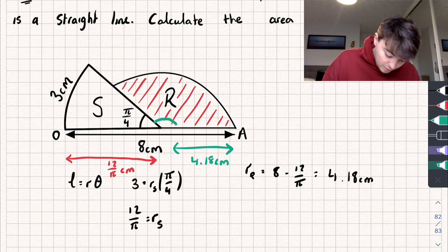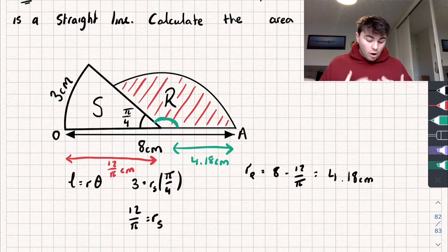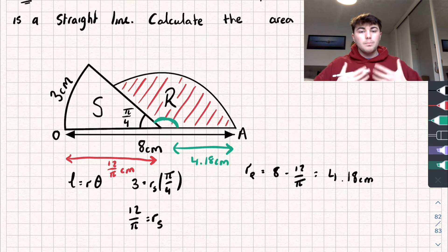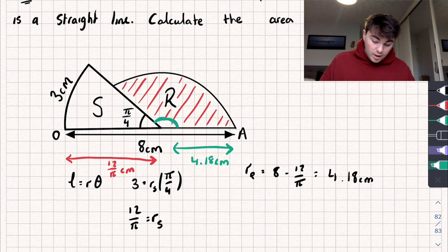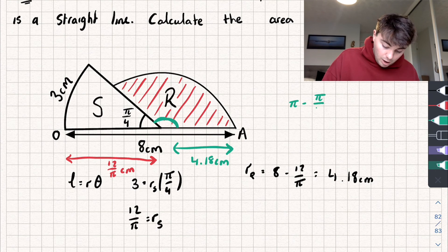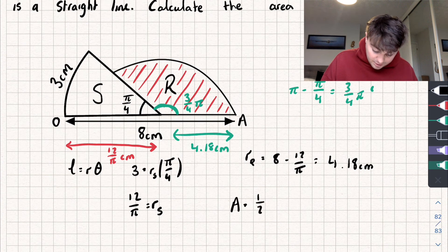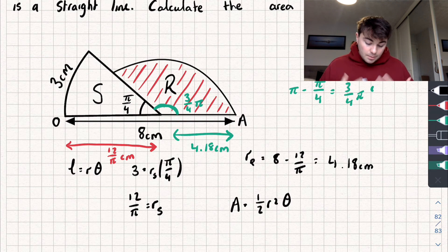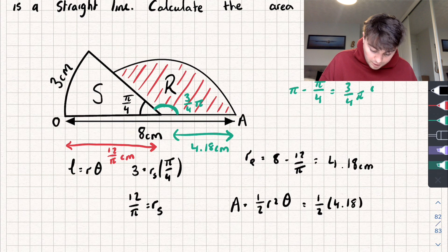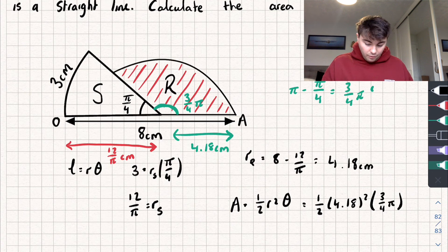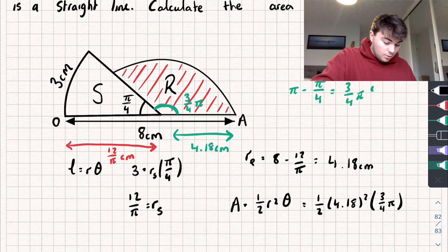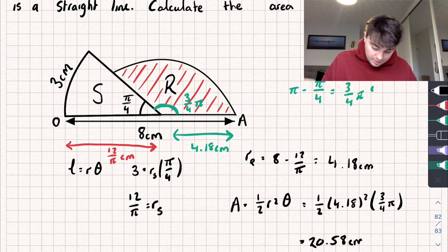Since OA is a straight line, the total angle is pi radians. The angle in sector R is pi minus pi over 4, which equals three quarters pi radians. Now using area equals one half r squared theta: one half times 4.18 squared times three quarters pi, which gives an area of approximately 20.58 centimetres squared.